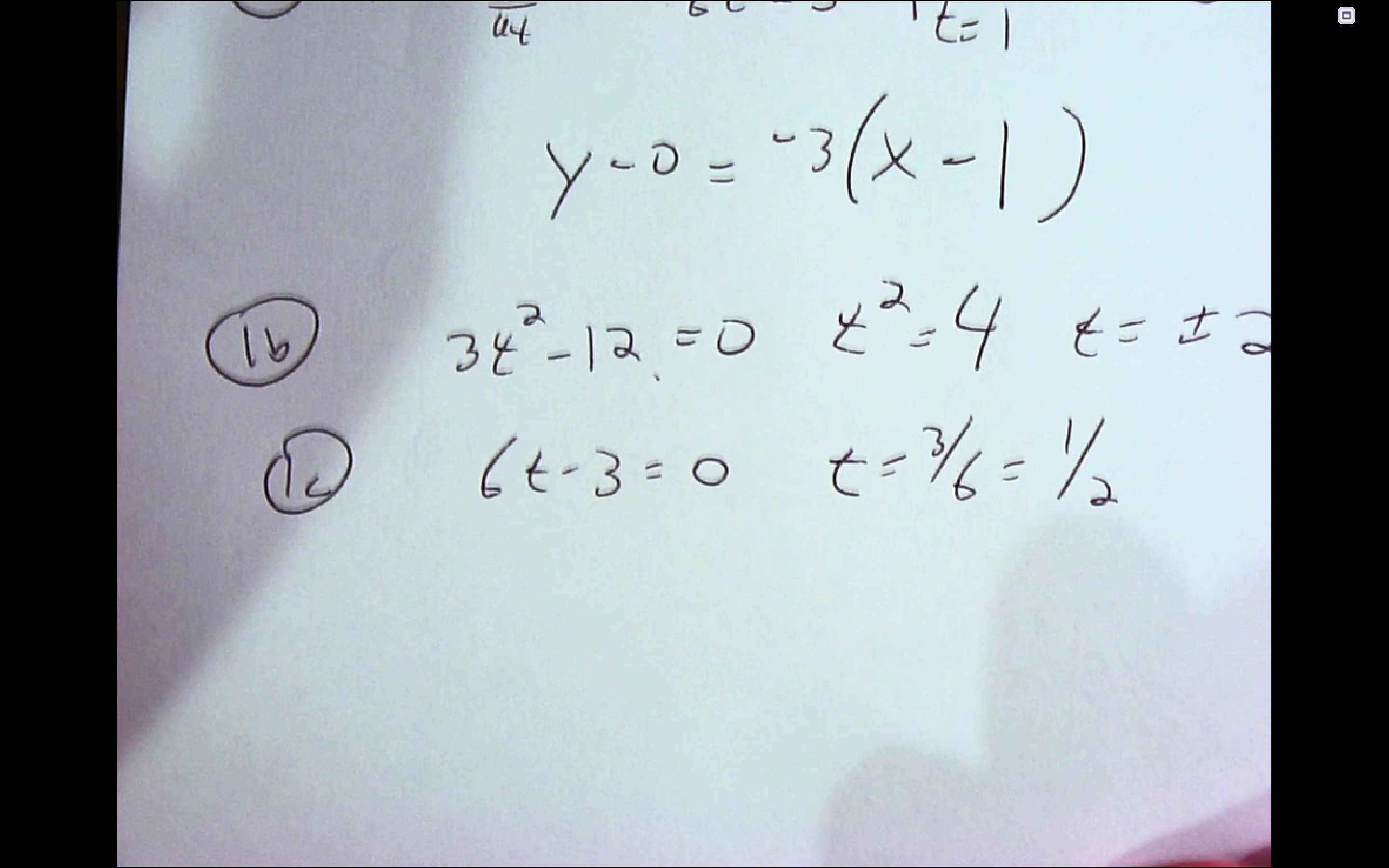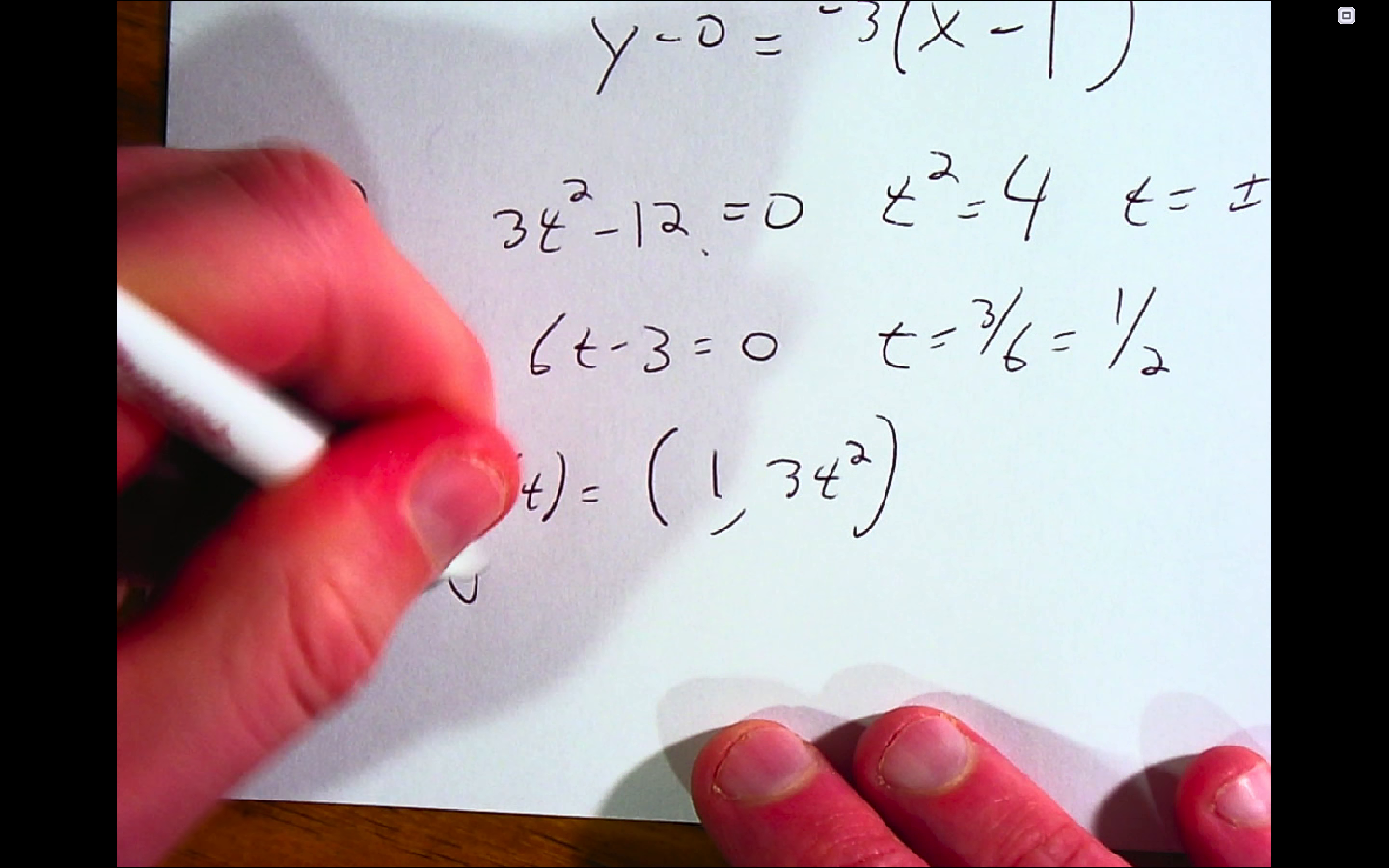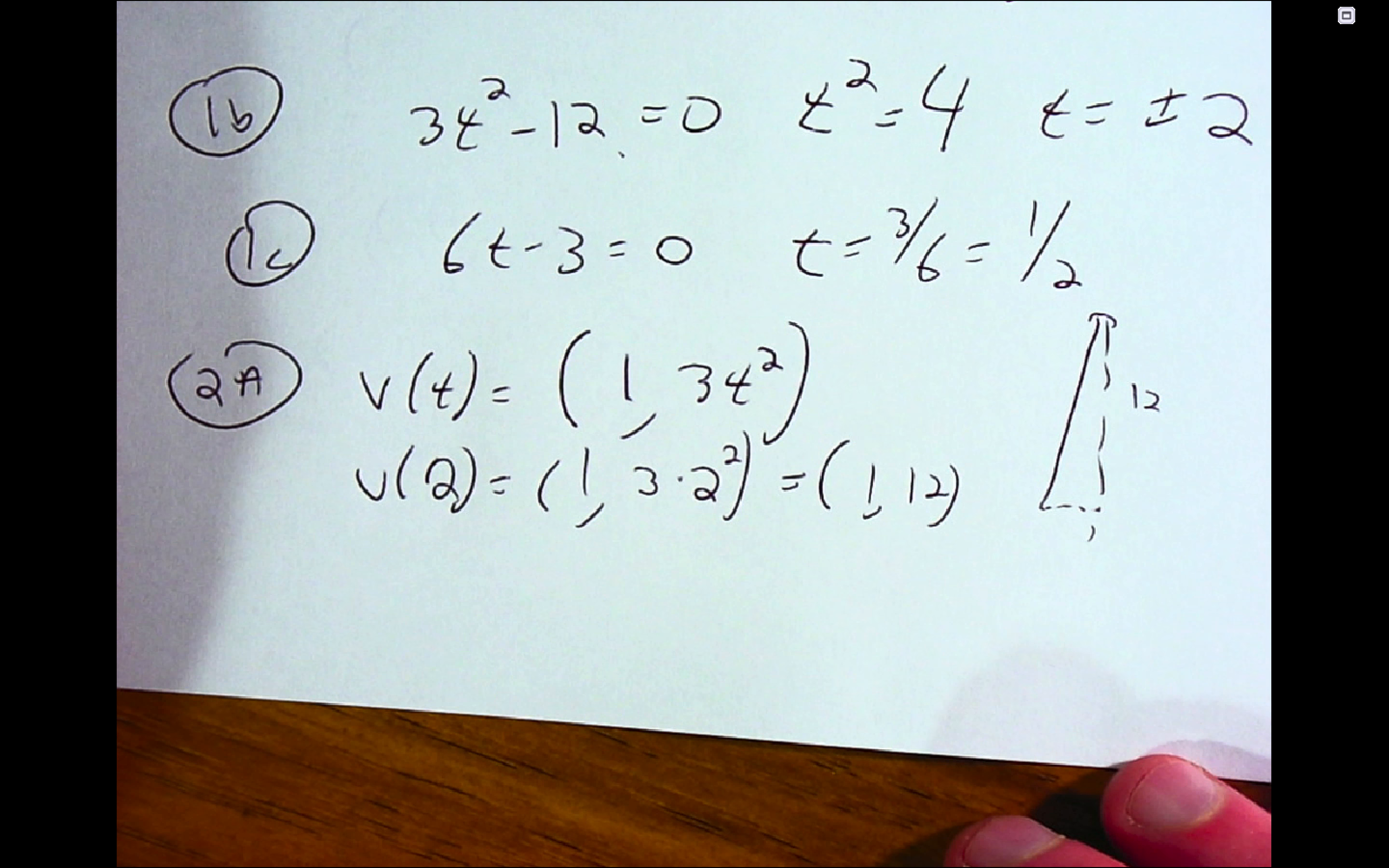All right, number two, we have a position function. What is the velocity? Velocity is going to be a vector. And so the velocity vector is just the derivative of the x component comma the derivative of the y component. And if we want to know the velocity at 2, we plug in 2 and we get 1 comma 12. So again, that's an arrow that basically has an x component of 1 and a y component of 12. So at that point, the particle is sort of heading off into that direction.